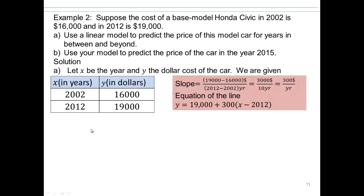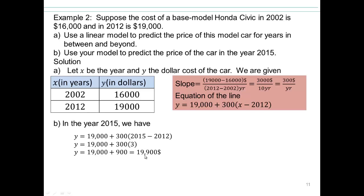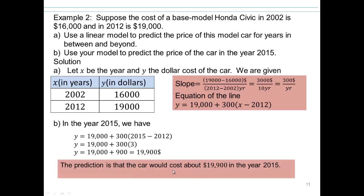All right, so now, once we have that, let's take a look at what happens in year 2015. So 2015 is three years since 2012. So if you use this, that's three times $300, which is $900, so $19,900, right? So our prediction is that the car would cost about $19,900 in the year 2015.